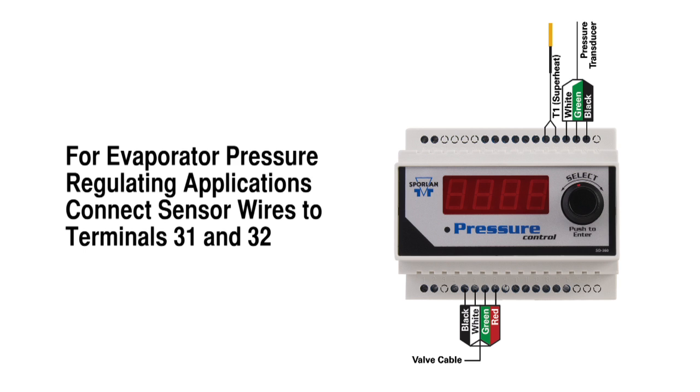For evaporator pressure regulating applications, mount the optional suction vapor temperature sensor to the suction line. Connect the sensor wires to terminals 31 and 32. This sensor may be used to monitor and view superheat.